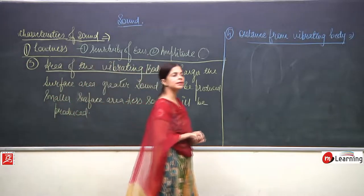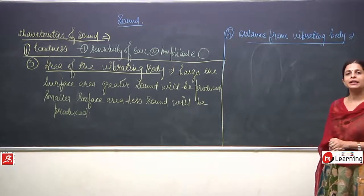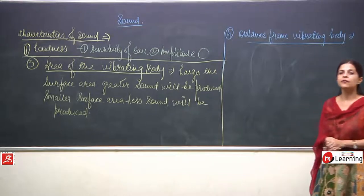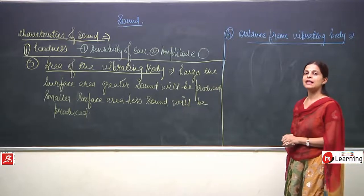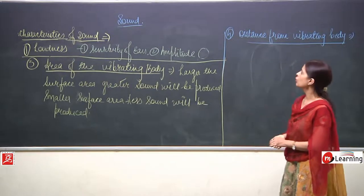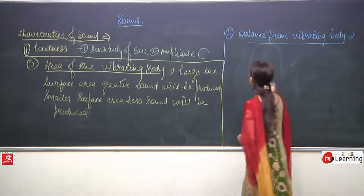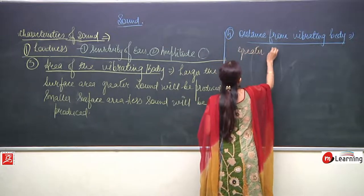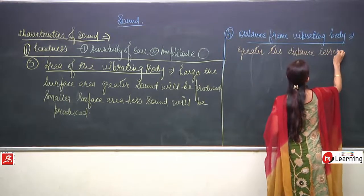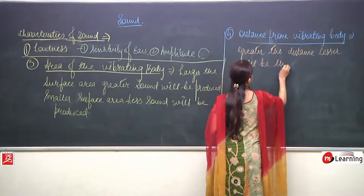To recap loudness: first point was sensitivity of ears; second was amplitude — greater the amplitude, greater the sound; lesser the amplitude, lesser the sound; third was area of the vibrating body — bells and drums examples show that more area means more sound; fourth is distance from the vibrating body — greater the distance, lesser will be the sound.